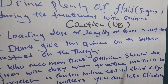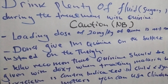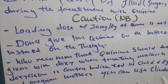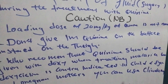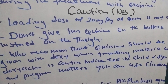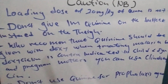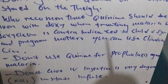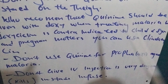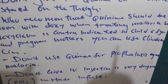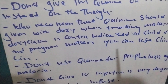It is also recommended that quinine be given with doxycycline when treating malaria. However, doxycycline is contraindicated in children and pregnant mothers — in those cases, you can use clindamycin instead. Do not use quinine as a prophylaxis treatment against malaria. And do not give IV quinine as a direct injection — it is very dangerous. You must infuse it in 5% dextrose, which is the safest way to administer IV quinine.